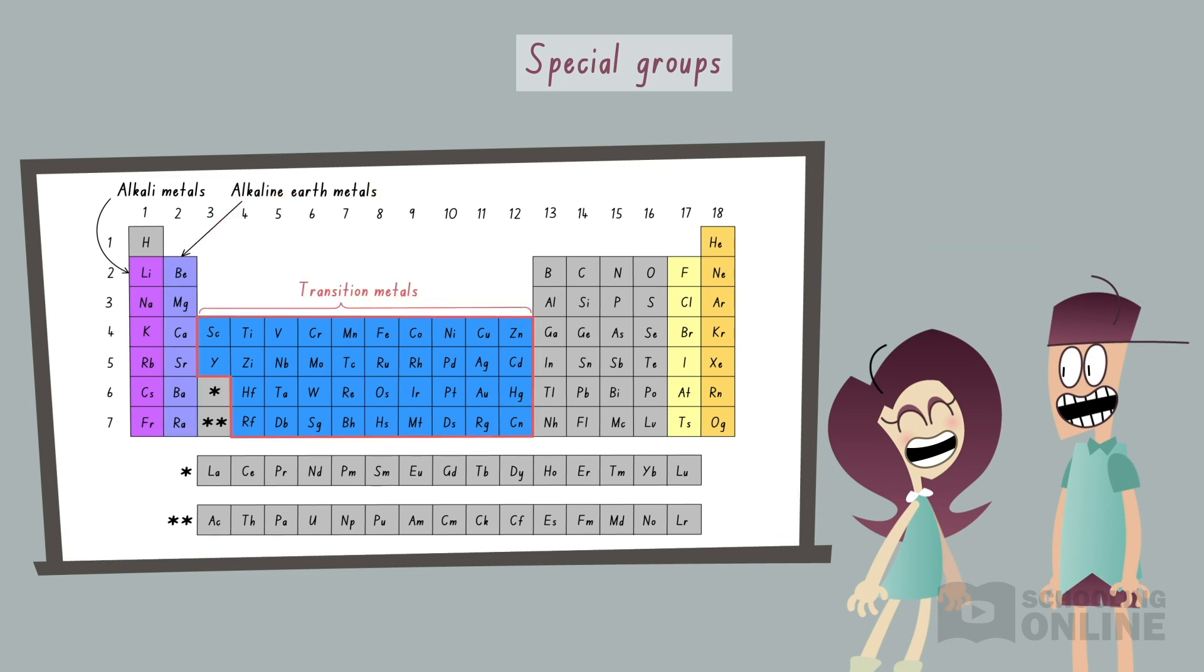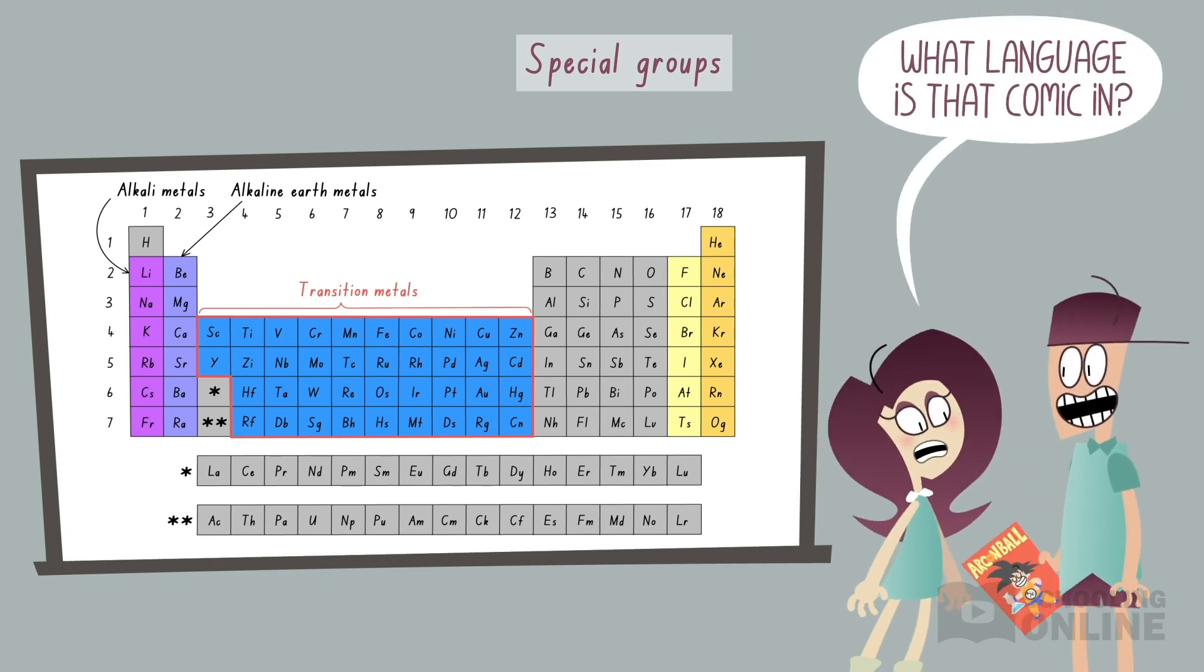Groups 3 to 12 are referred to as transition metals. They usually have one or two electrons in their outermost shell.